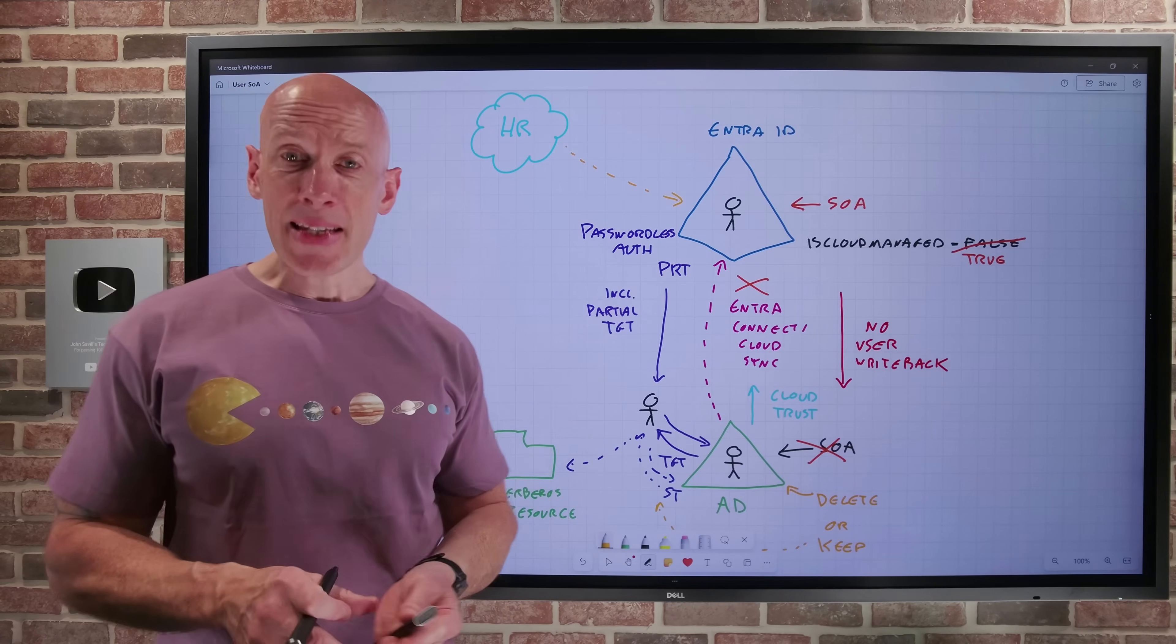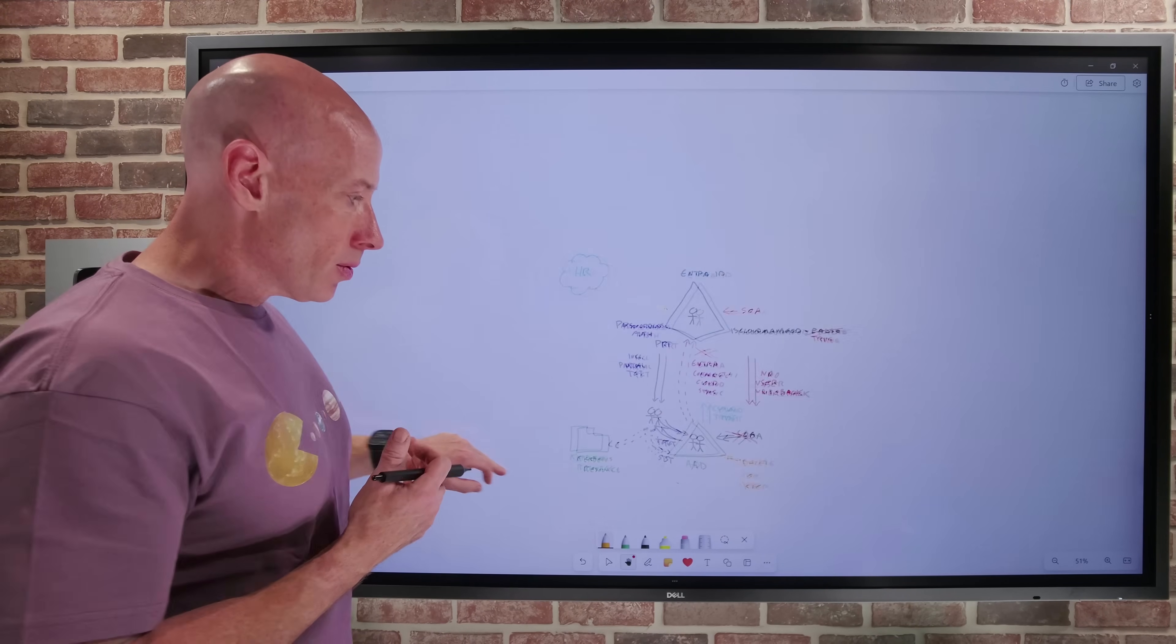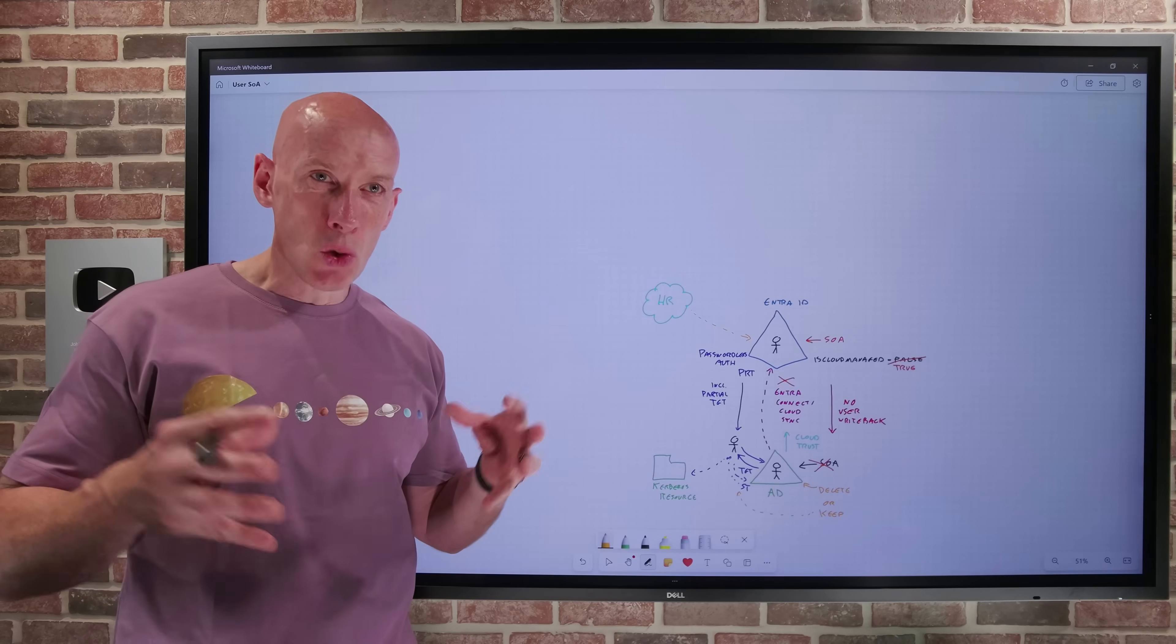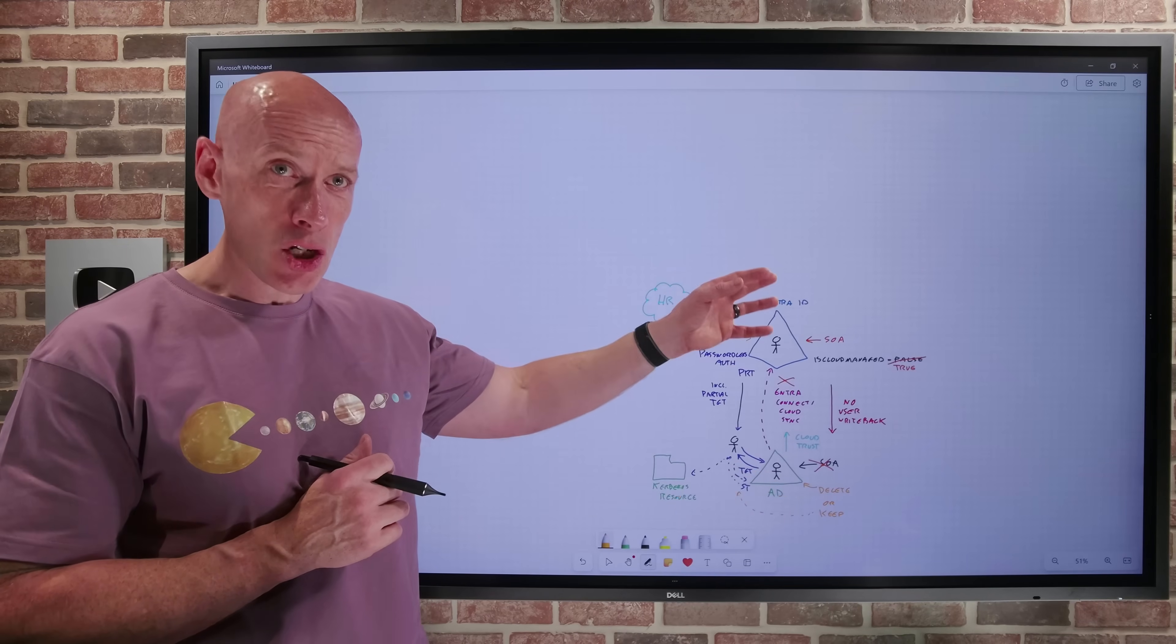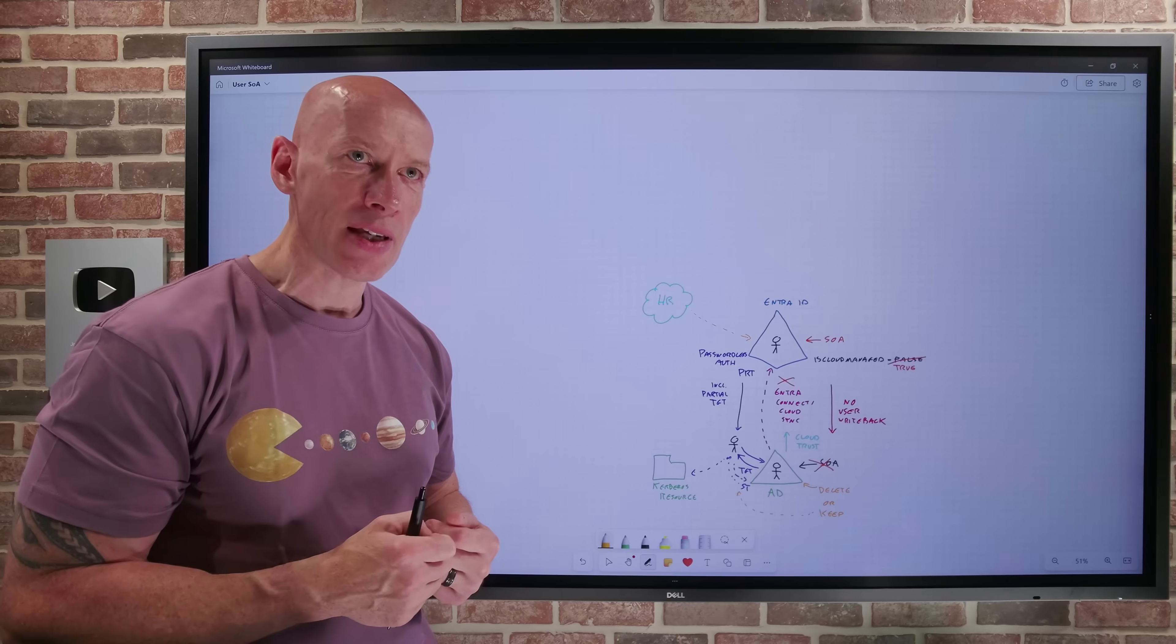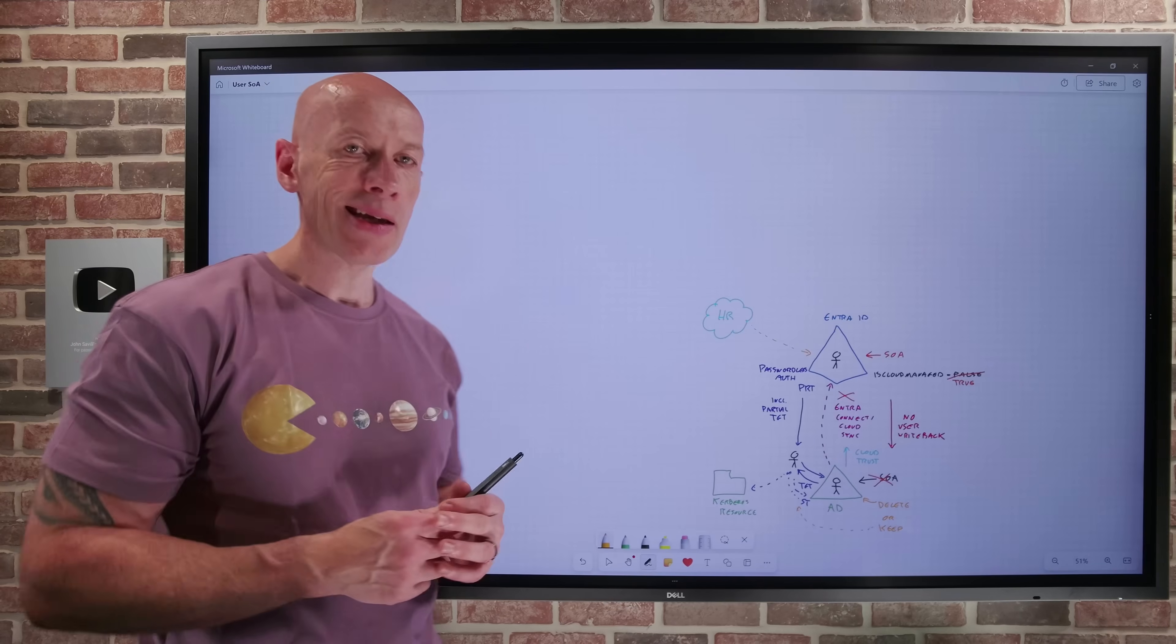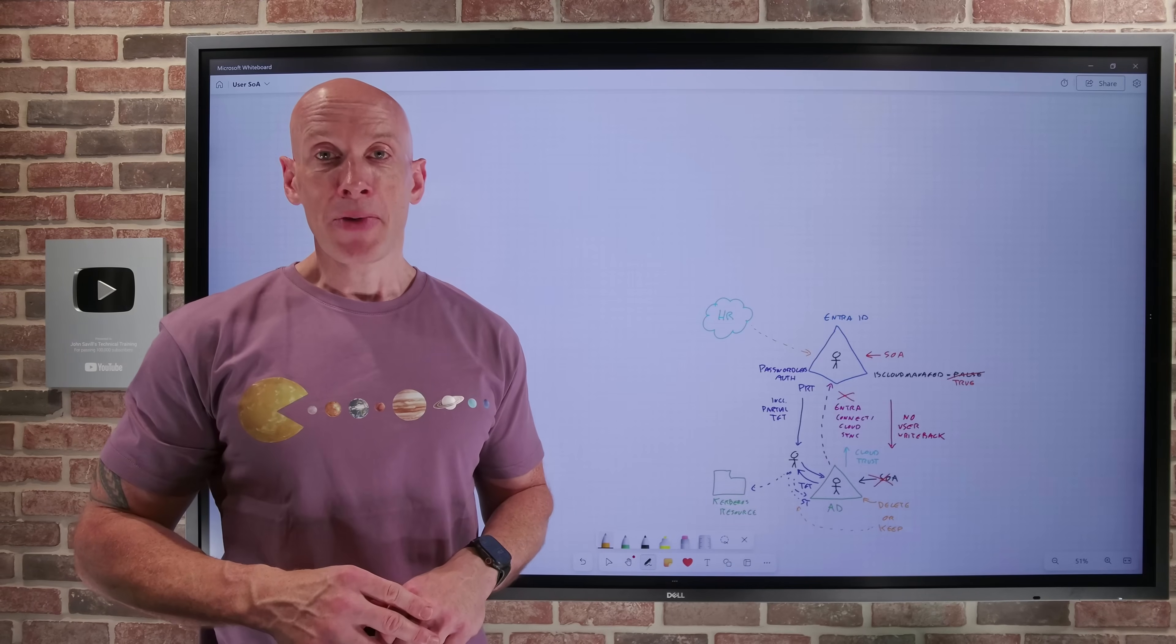But that is it. It really is, as most organizations are shifting where their identity true source of truth is, it's not AD anymore. It is Entra. And I want to take advantage of all of the fantastic capabilities. I need to start shifting that source of authority from my users, my groups, to Entra. So now with users, I can go ahead and do this. As always, I hope this was useful. Until next video, take care.